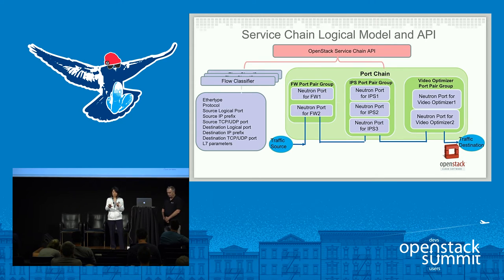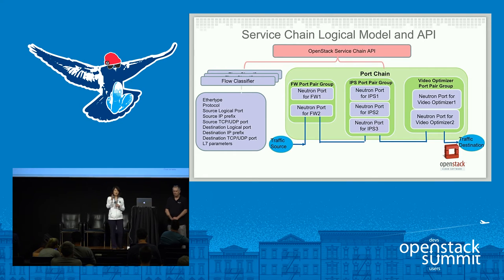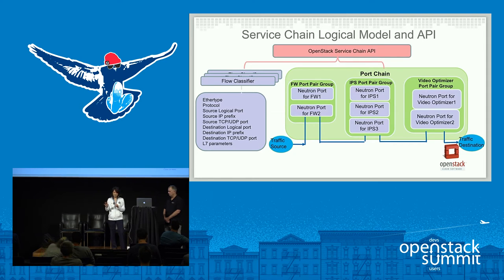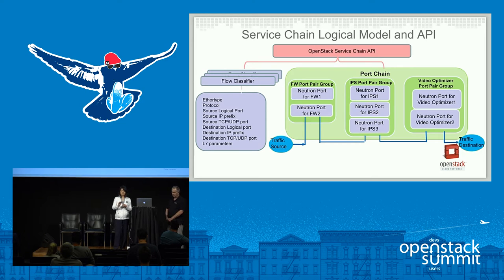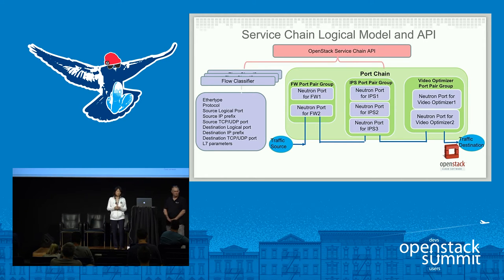In this example, the port chain consists of a firewall service function, an IPS service function, and a video optimizer service function. Each service function could have multiple instances grouped together into a group. The firewall has two service instances, the IPS has three instances, and the video optimizer has two instances. Each instance is represented by a pair of neutron ports, and these ports grouped together form a port pair group. The port chain consists of an ordered sequence of port pair groups, grouped together for load distribution purpose.